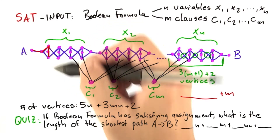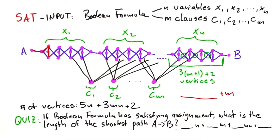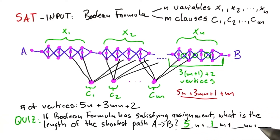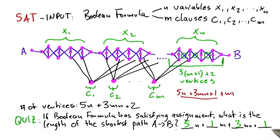If I go one, two, three, four, five vertices, then the path has length four, and so on. So what we have here is 5N plus 3MN plus one, and then we have to add M. So our total is 5N plus M plus 3MN plus one.